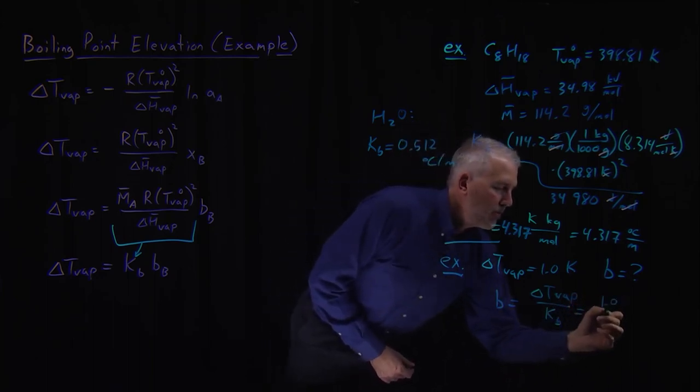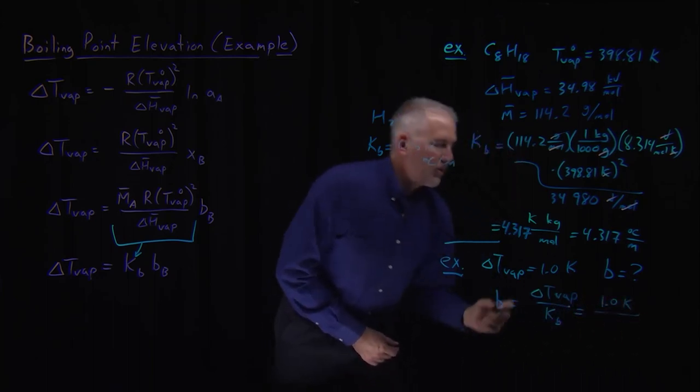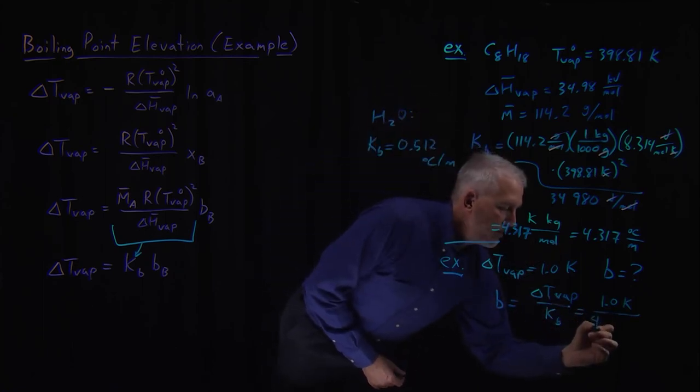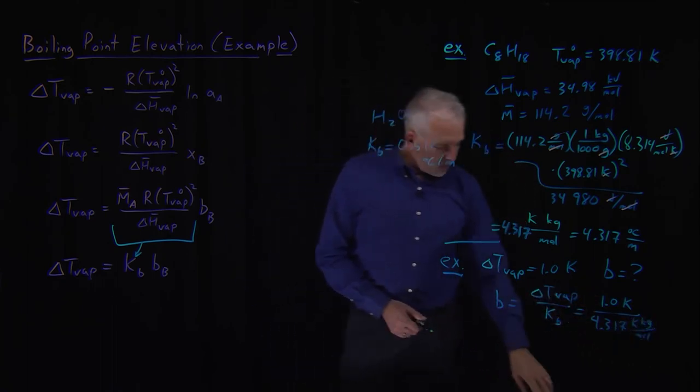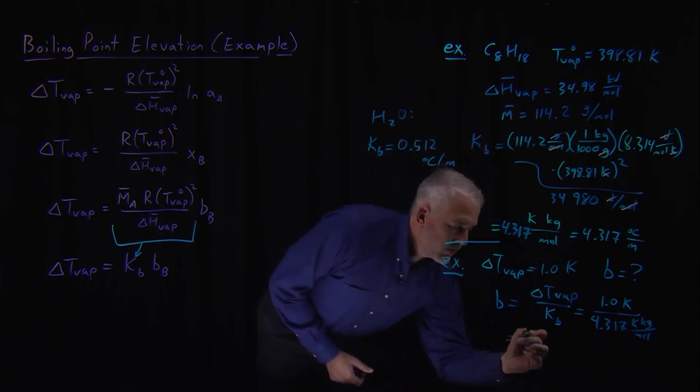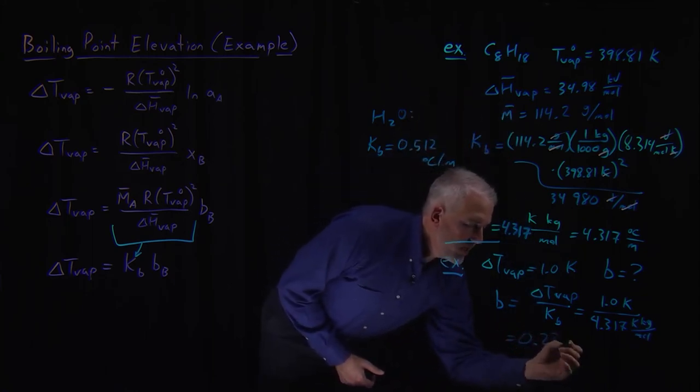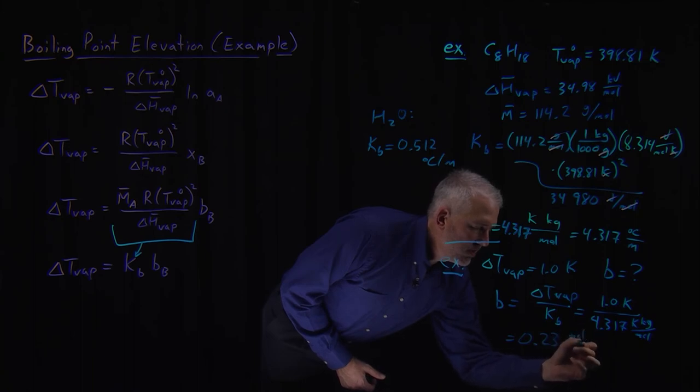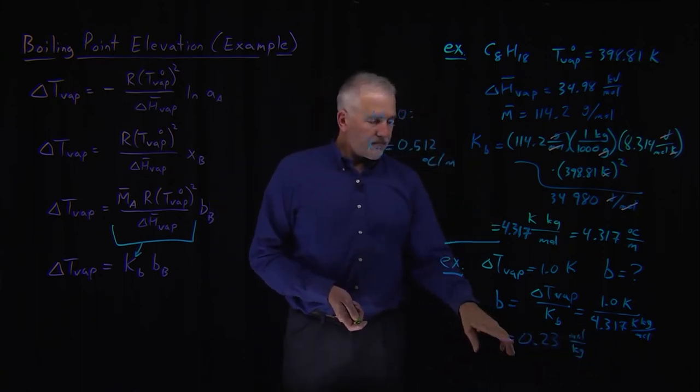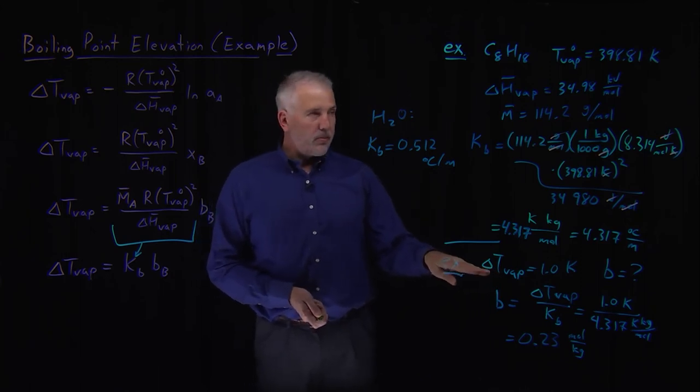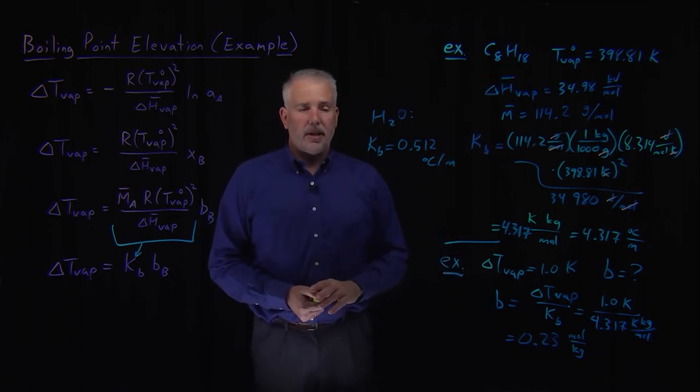So if we want to change by one Kelvin and the boiling point elevation constant is about four, so one divided by four is about a quarter, or more specifically, I would need a concentration of 0.23 molal, 0.23 moles per kilogram in order to elevate the boiling point of octane by a full degree.